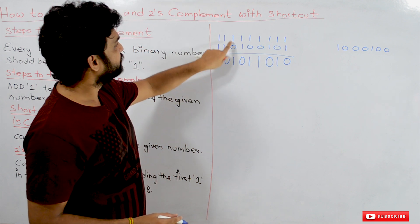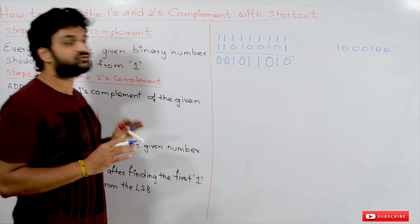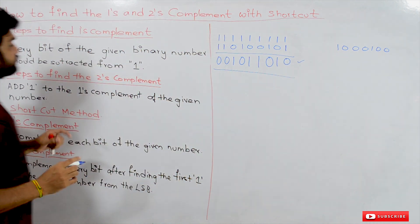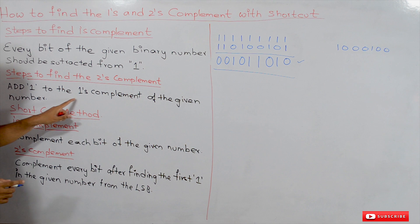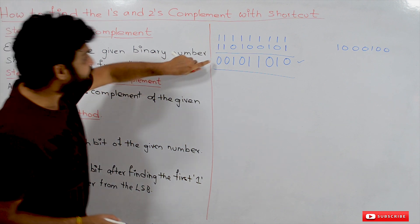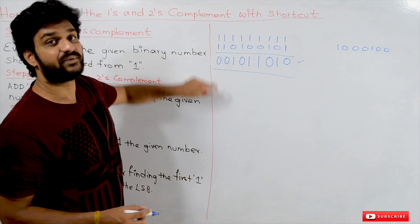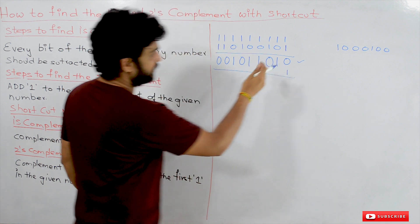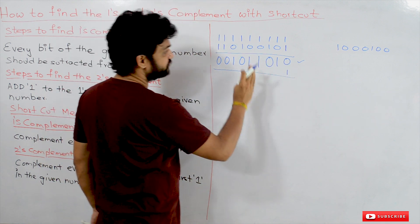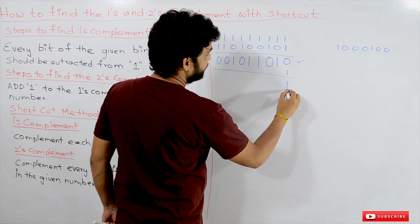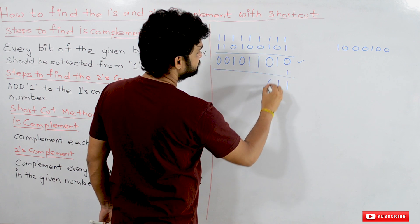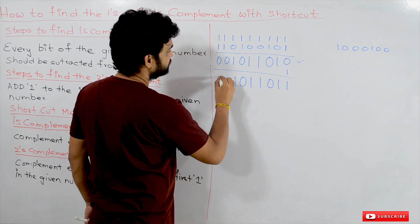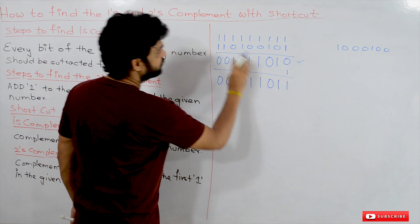Now to find the twos complement: we have obtained the ones complement of the given number. We add one to the ones complement. Adding one gives us 1 1 0 1 1 0 1 0 0, which is the twos complement of the given number.